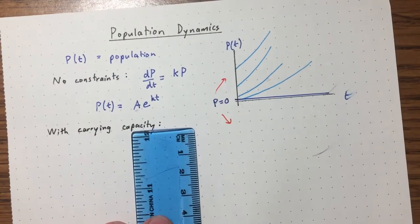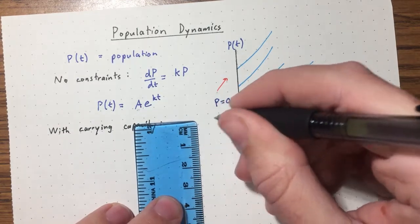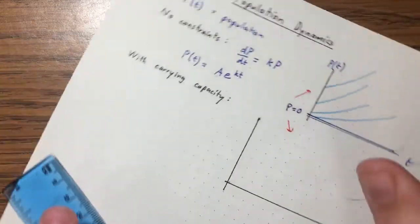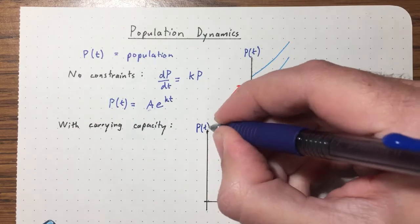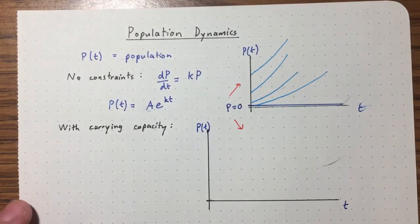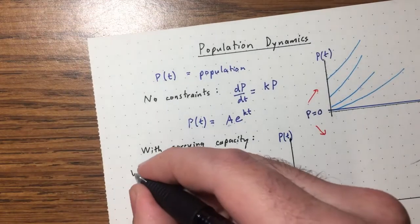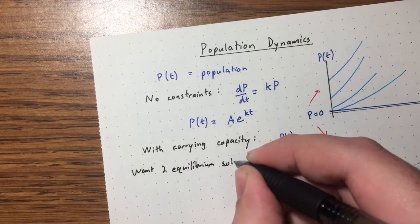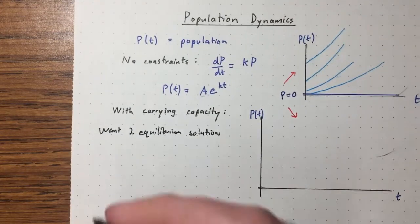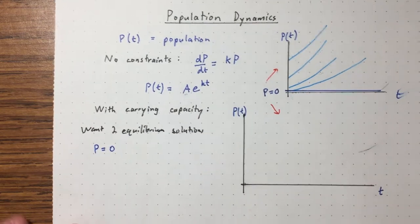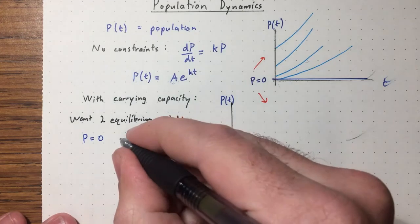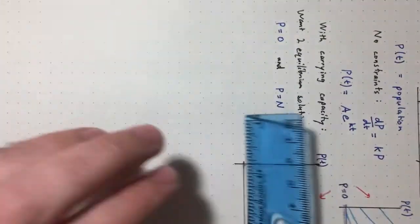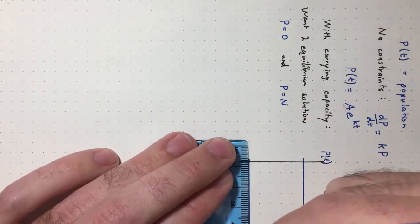Before writing a differential equation, I want to think about what the solution should look like and then deduce a differential equation from that. We'll want two equilibrium solutions. P = 0 should be one: if the population starts at zero, it stays at zero. The other one will be the carrying capacity N. If the population has reached N, it goes no further — it's stuck there.